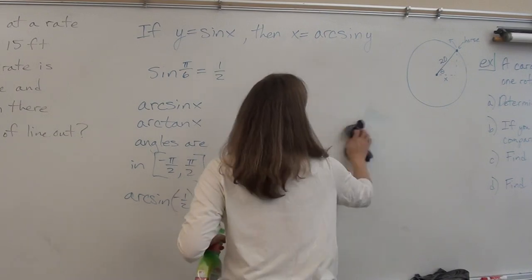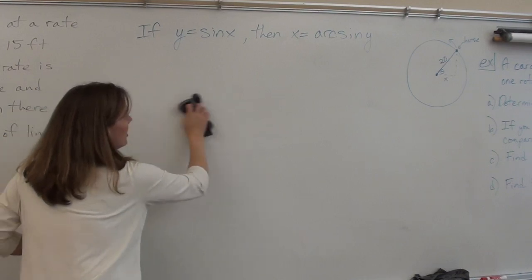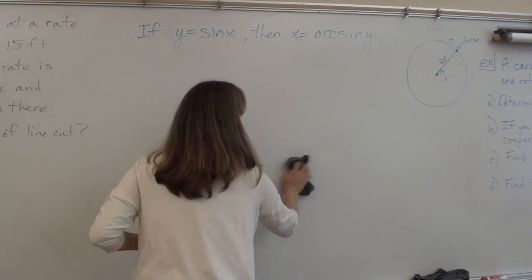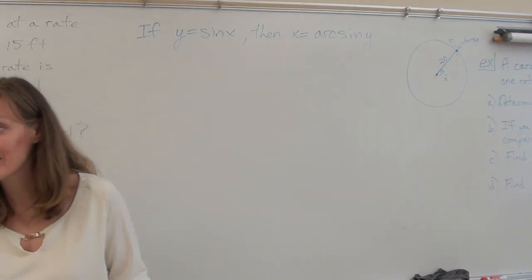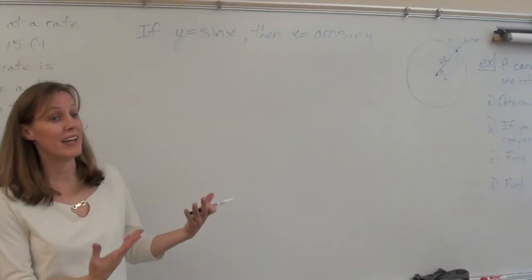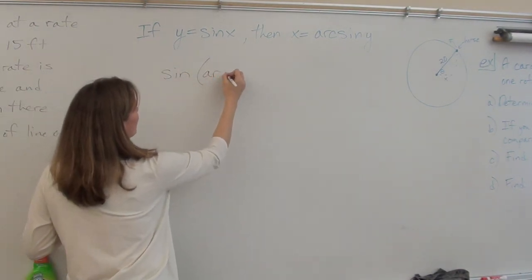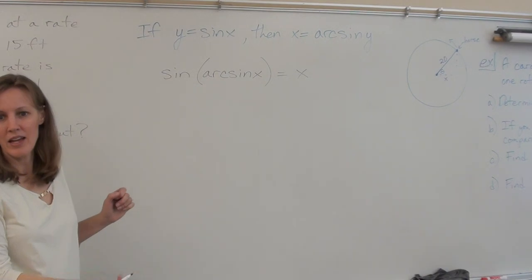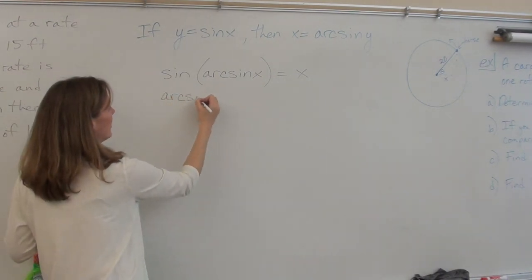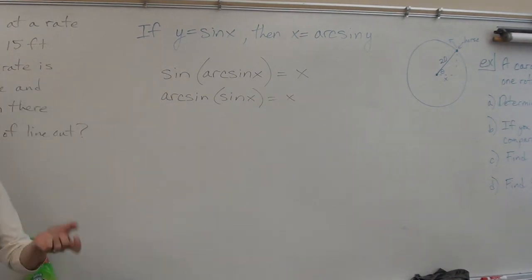Functions and their inverse functions are literally inverse functions. I've been emphasizing the concept: if f and g are inverse functions, then f(g(x)) = x and g(f(x)) = x. So the sine of the arc sine of x is x, and the arc sine of the sine of x is x — one undoes the other.